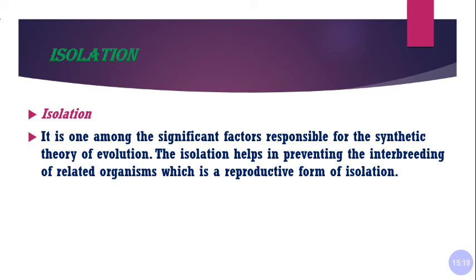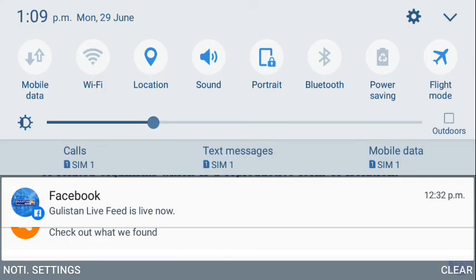So the modern synthetic theory is the most widely accepted theory nowadays, through which we can understand the origin of life and how new species form — through mutations, variations, heredity, natural selection, and isolation. This is the most widely accepted theory of evolution. Thank you dear students. Assalamualaikum.